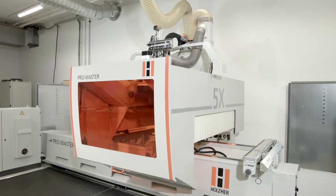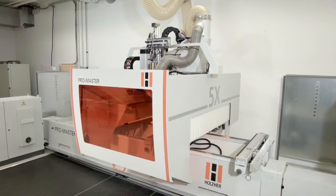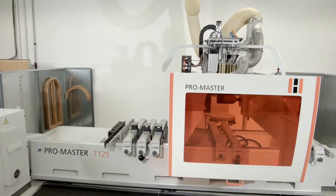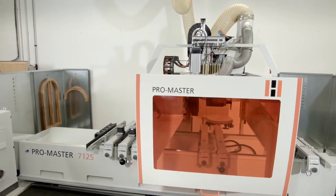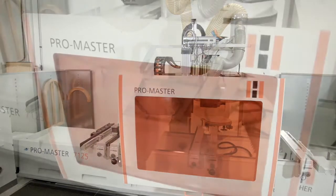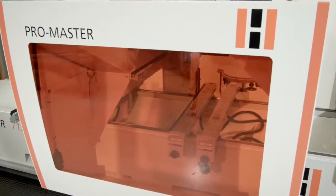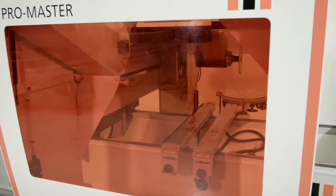The ProMaster 7125 is the powerful and universal 5-axis CNC for your company. With generous working dimensions and a fully equipped machine package, the ProMaster 7125 is the perfect fit for your shop.